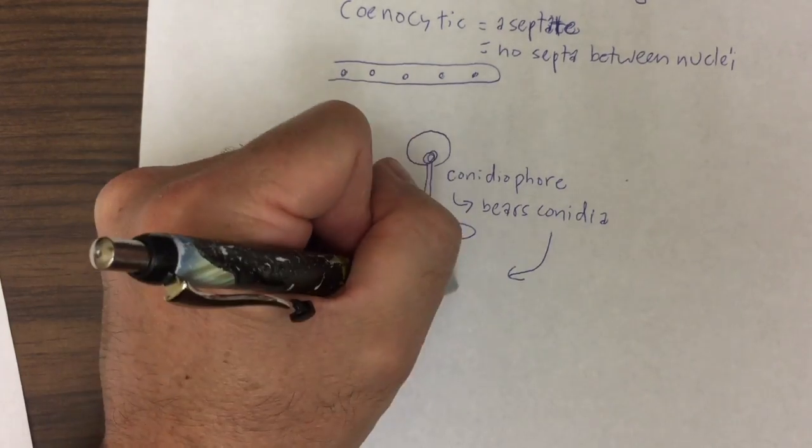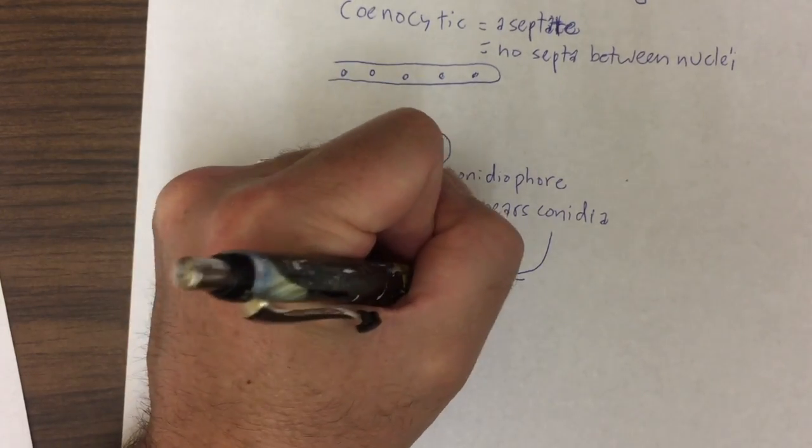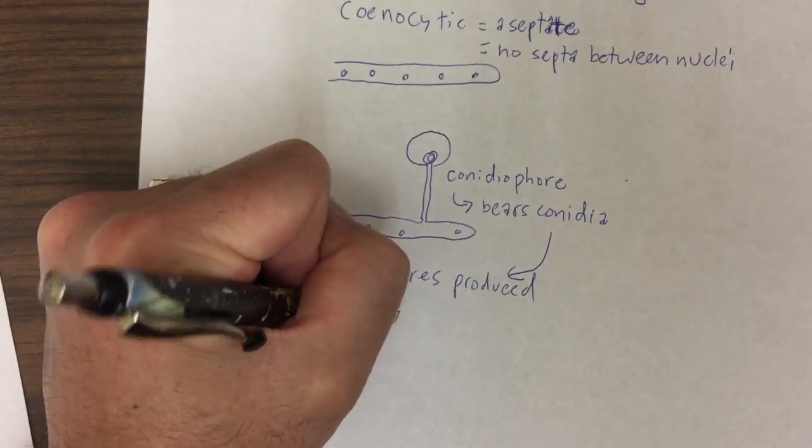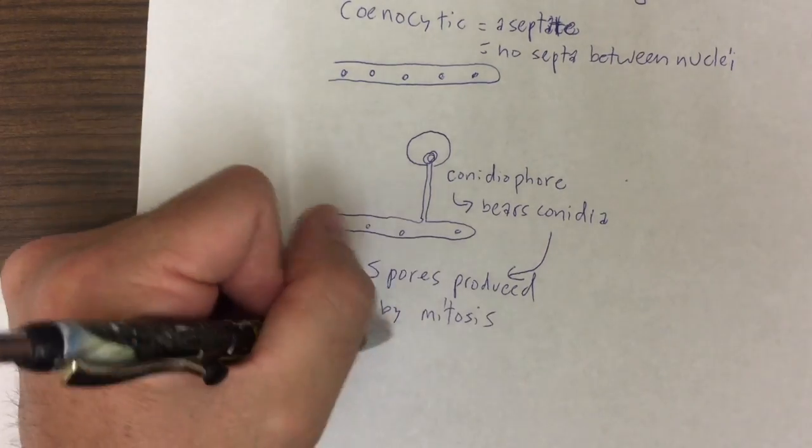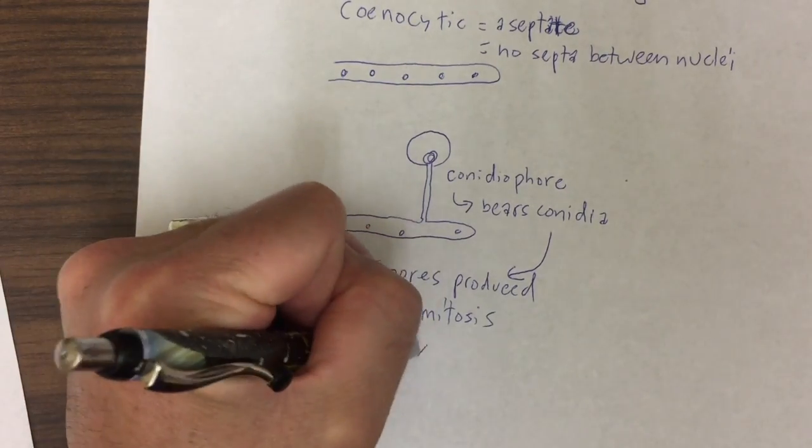And conidia are spores produced asexually, or produced by mitosis.